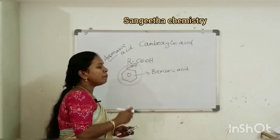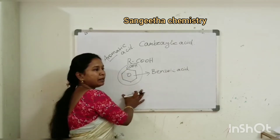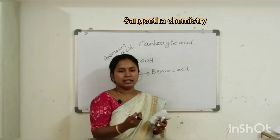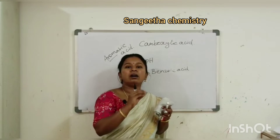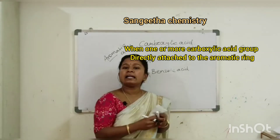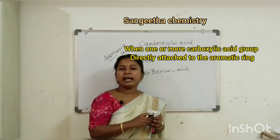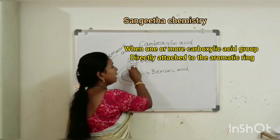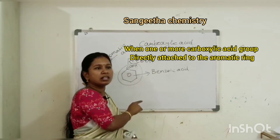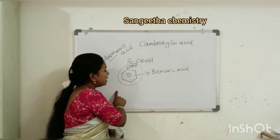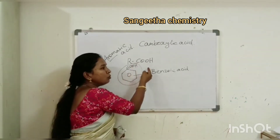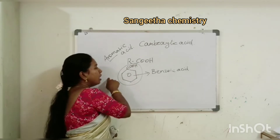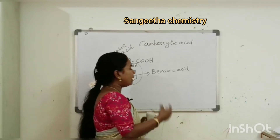In today's class we are going to focus on aromatic acid. Aromatic acid is defined as when one or more carboxylic groups are directly attached to the aromatic ring — directly attached to the aromatic ring. It is called aromatic acid.